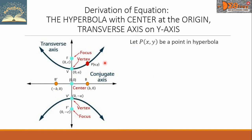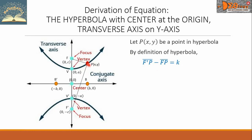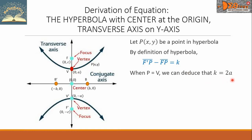Now we take one point of the hyperbola, denoted as P with coordinates (x, y). With this moving point, we can get the distance from the first focus and also from the second focus. By definition of the hyperbola, the distance F'P minus the distance FP is constant, equal to K. When the moving point touches one of the vertices, say V, the value K equals 2A. So we replace K with 2A as our new working equation.